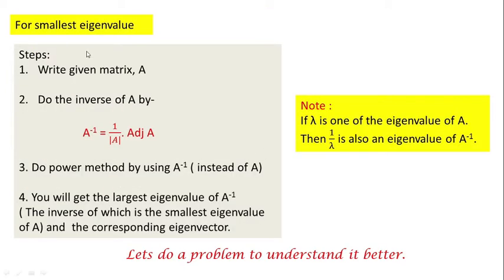Now let's see the algorithm for finding out the smallest eigenvalue. First you take the matrix A, then — this step is very important — you find out the inverse of A using the formula A inverse equals (1 / det(A)) × adjoint(A). The logic is that if lambda is an eigenvalue of A, then 1/lambda will be an eigenvalue of A inverse. So if you apply the power method to A inverse, you will get the largest eigenvalue of A inverse, and the inverse of that will be the smallest eigenvalue of A.